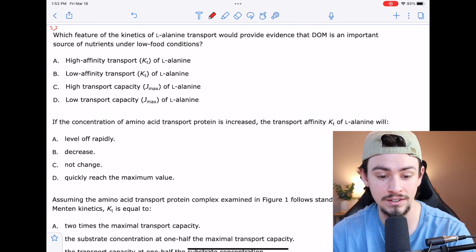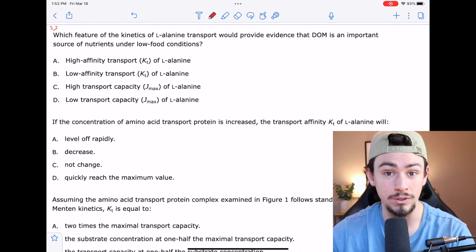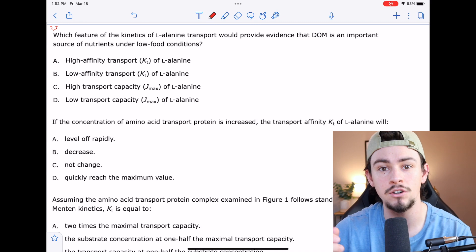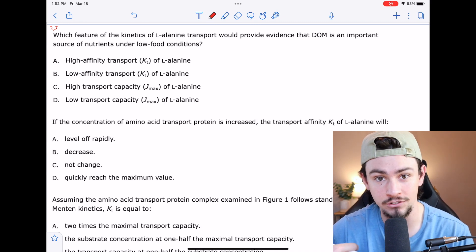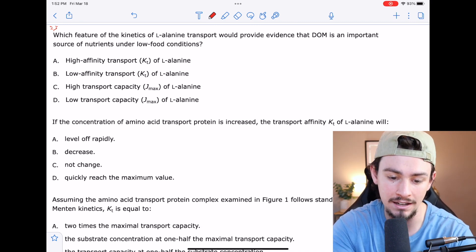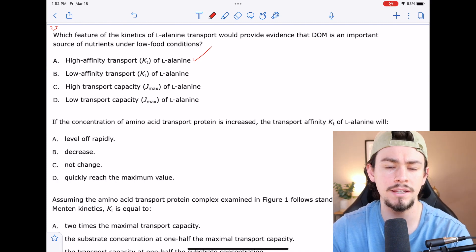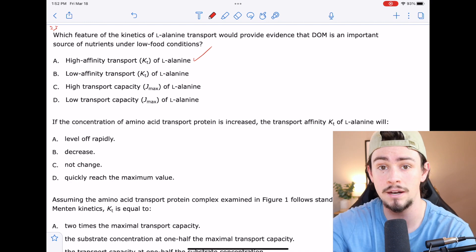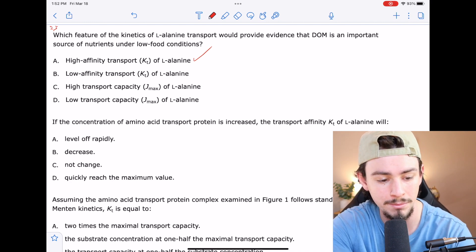Going through these answer choices, A says high affinity transport of L-alanine. Well, yeah, if you have high affinity, that means that even if you just have just a little, we're going to take every inch that we get. So I like high affinity. B says low affinity transport. No, that means that we're going to need a ton to actually flood our receptors before we allow that amino acid to get transported through. So maybe not B.